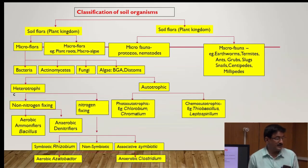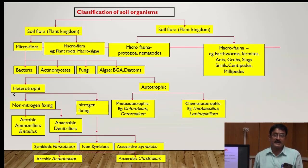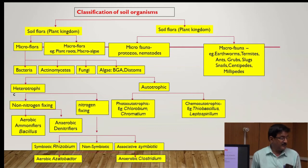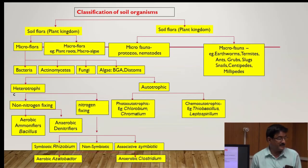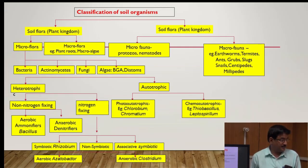Soil fauna is also divided into two groups. Micro fauna, for example protozoa and nematodes, are present in the animal kingdom. Macro fauna includes, for example, earthworms, termites, and slugs.